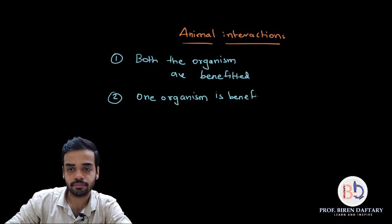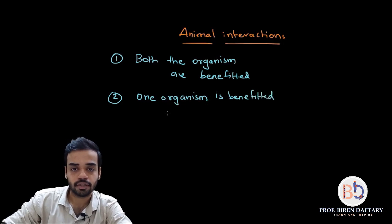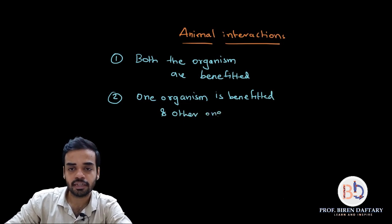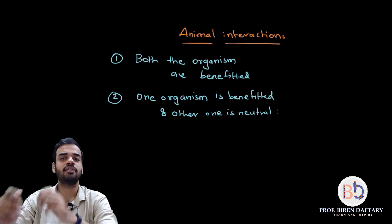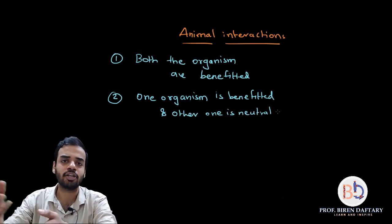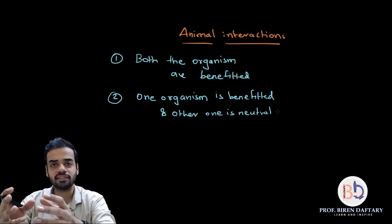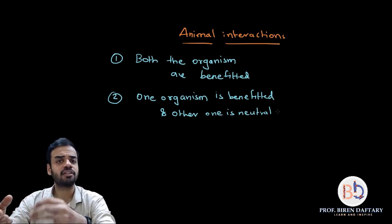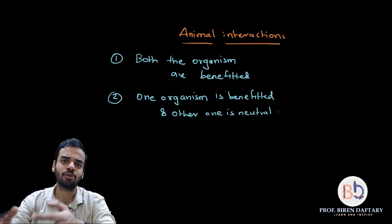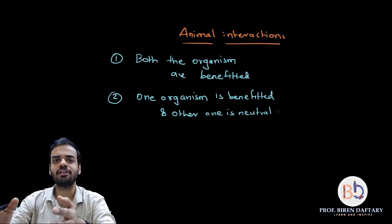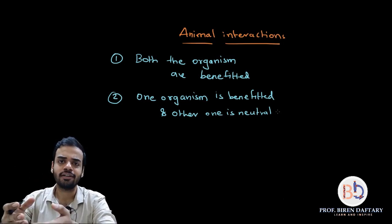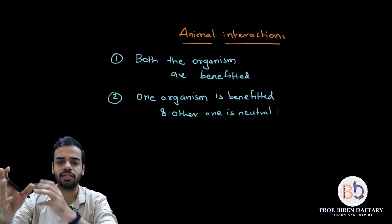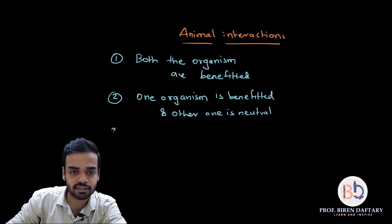The second category is where one organism is benefited and the other organism is neutral. Neutral means that the other organism is neither benefited nor harmed. So one of them will be benefited because of the other, whereas the other one is neither harmed nor benefited — it is unaffected, a neutral thing.